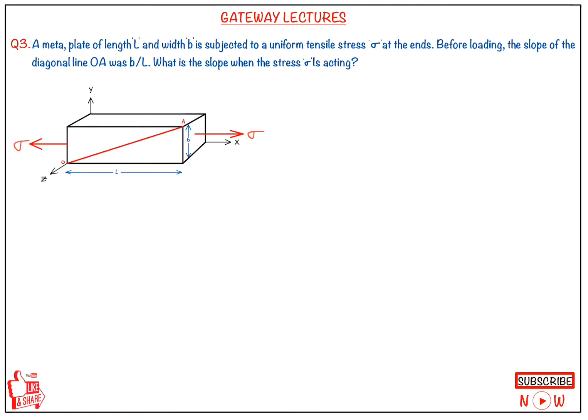Here they are asking: after loading with stress sigma along the longitudinal direction, what will be the final slope of OA? To find the final slope we first need the initial slope. Initial slope of OA — since it is a straight line we write it directly as Y by X — the dimension along Y is B and along X is L, so initial slope is B by L.